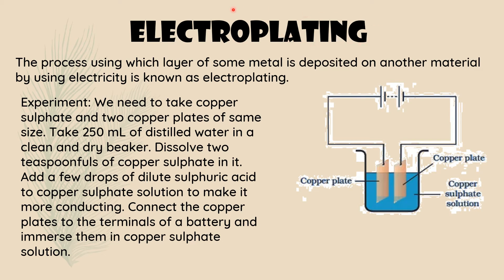One important application of the chemical effect of electricity is the process called electroplating. Electroplating is the process by which a layer of one metal is deposited on another material using electricity. Simply put, one metal is deposited on another material by using electricity — that is known as electroplating.